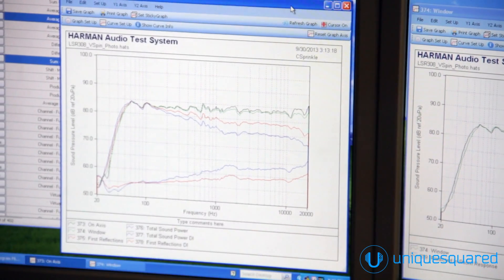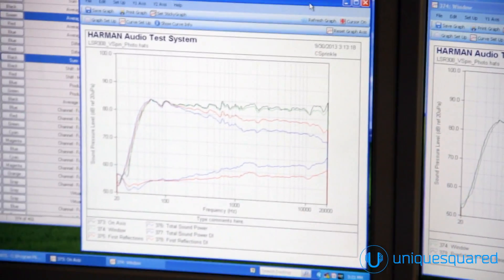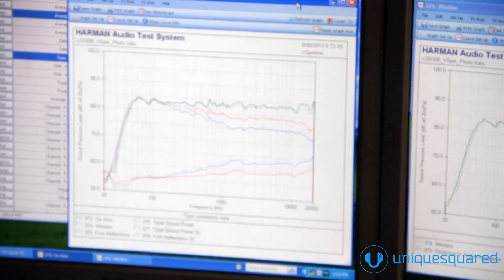And then the blue curve is the total sound power, which is an integration of all of those 72 measurements together.